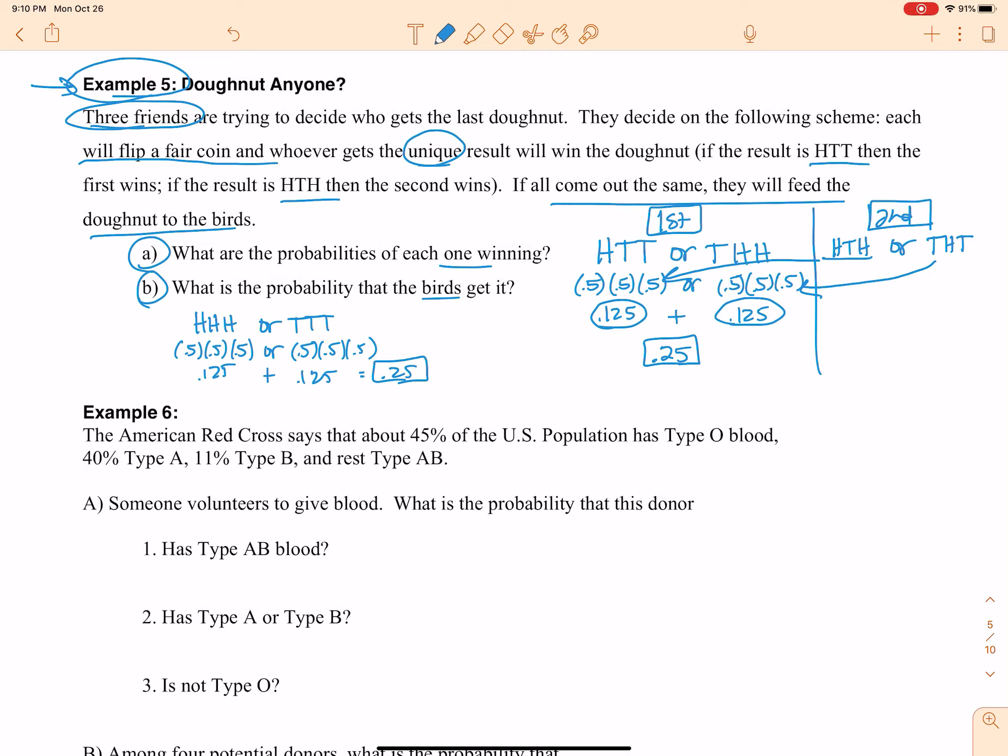The probability of one of the other people getting it, the other people, like the birds of people, never mind. The probability of one of the people, the three people getting it, is of course going to be 0.125. Awesome.